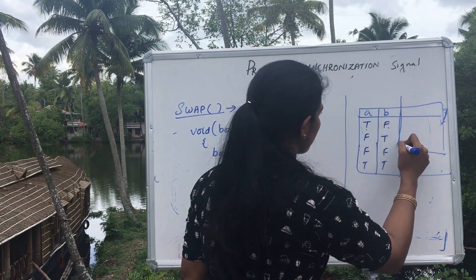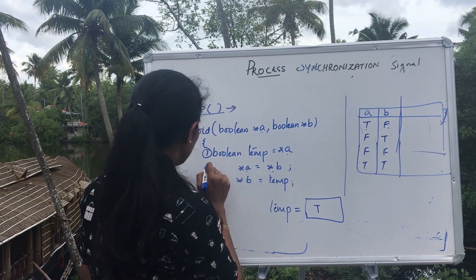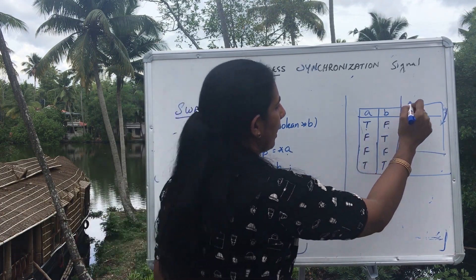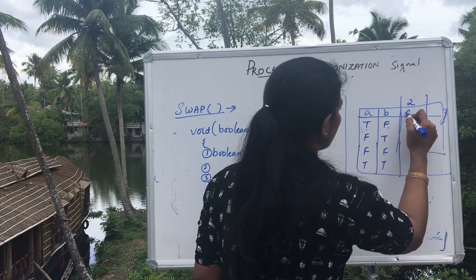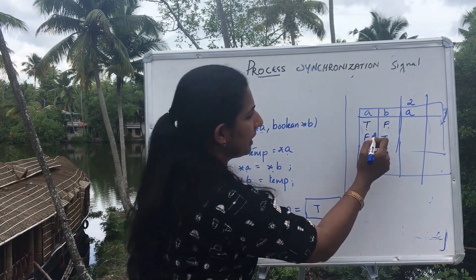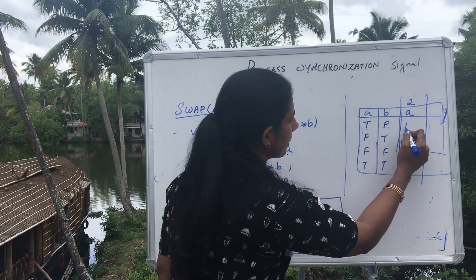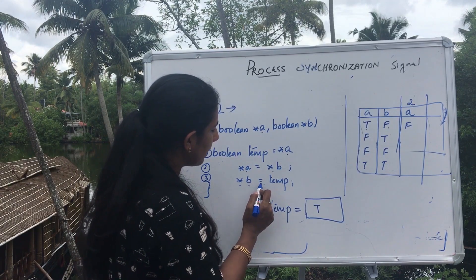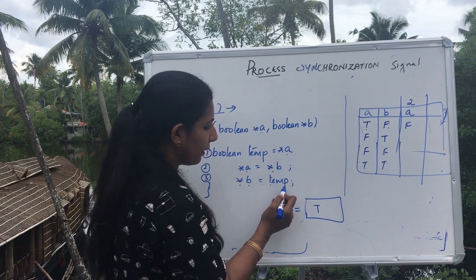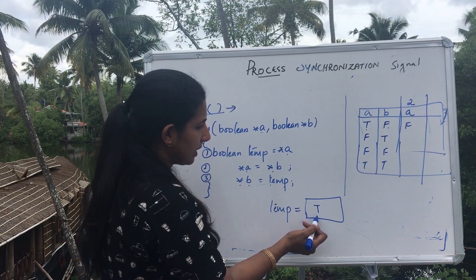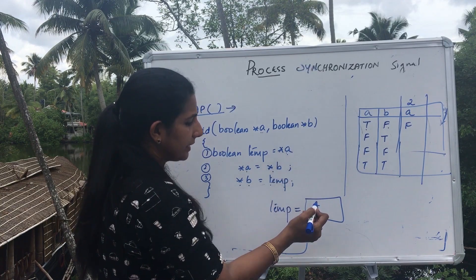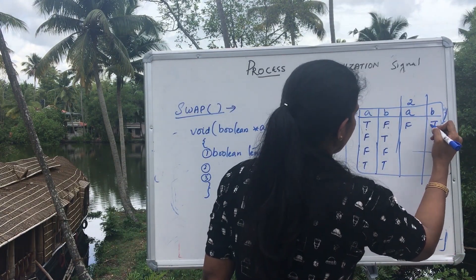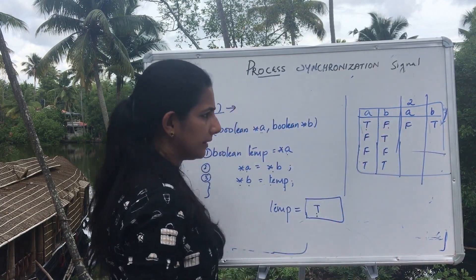After execution of line number 1, line number 2, and line number 3: after line 2, a will have the value of b, which is false. So a will be false. After line 3, b will have the value of temp. The value of temp is the original value of a, which is true. So b will be true.